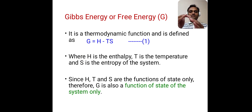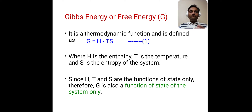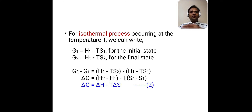Our Gibbs Free Energy is a state function, meaning it depends upon the initial state and final state of the system. This is because its definition involves H, T, and S, all of which are state functions. Now, if we consider an isothermal process — a process which occurs at constant temperature — we can analyze the change in Gibbs Free Energy.